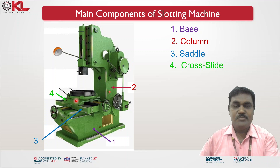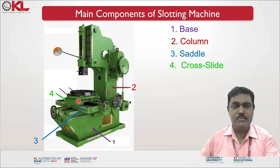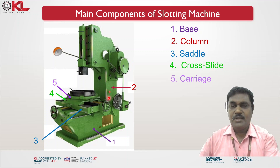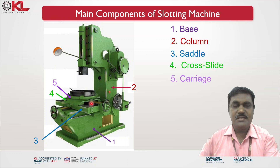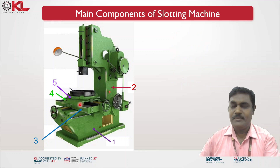The cross slide moves in a direction away from the column or toward it. The fifth component — the carriage — is mounted on top of the cross slide and is used to support the work table.